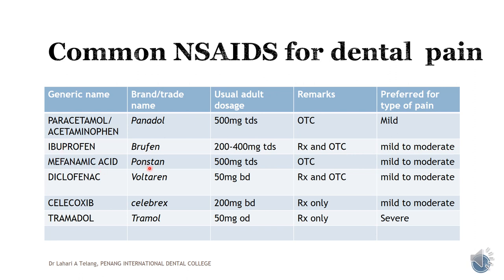Mefenamic acid, which is called Ponstan, and diclofenac, known as Voltaren — all of these are available over-the-counter. NSAID is very commonly available in our clinic as well, and preferred for mild to moderate pain.